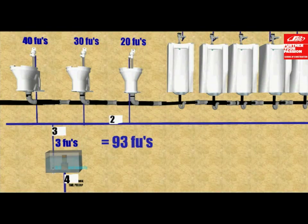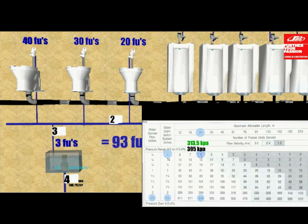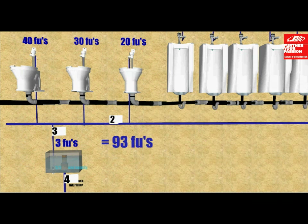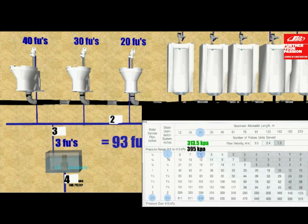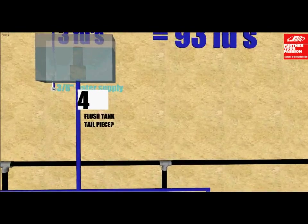Now let's check out number two, which feeds the two toilets on the left. Add the 40 and 30 fixture units for a total of 70 fixture units. Go back to table A2631 — under 70, you go to at least 83, and the size of number two is also inch-and-a-quarter. For number three, the water distribution branch feeding the urinal flush tank is worth 3 fixture units. Go back to table A2631, go to the 6 as it is higher than 3, scroll left — your water distribution branch should be half-inch for number three.